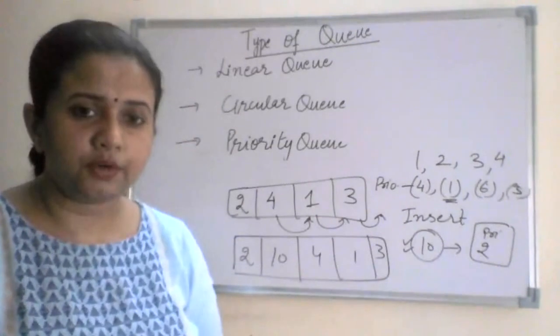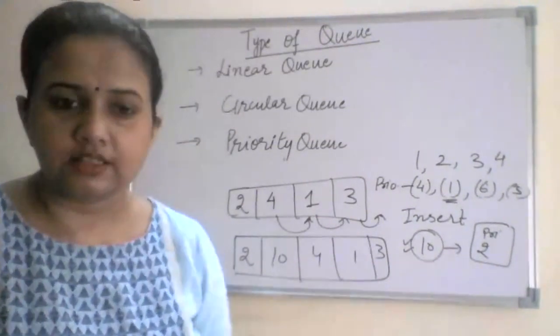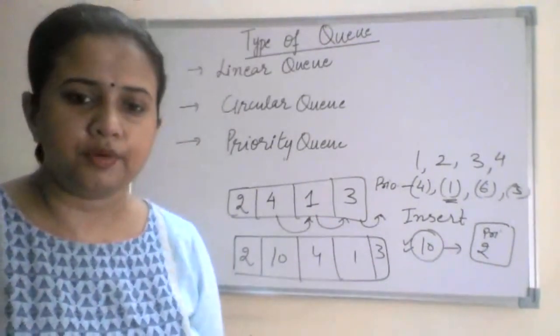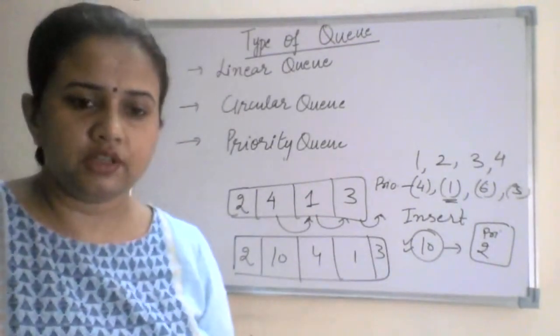So this is how a priority queue works. Is the concept of priority queue clear to you?